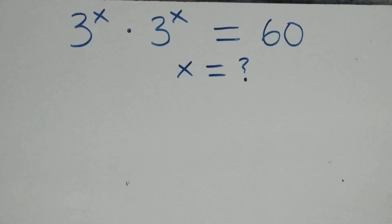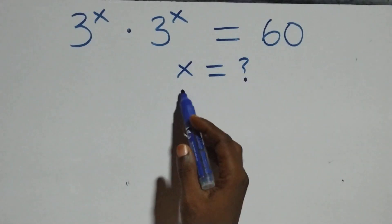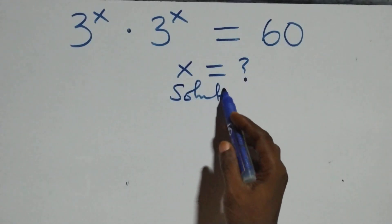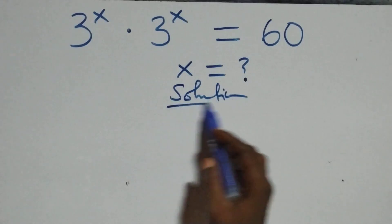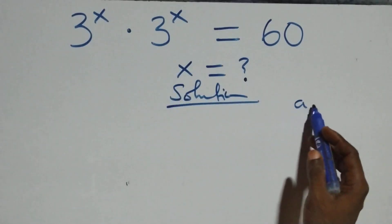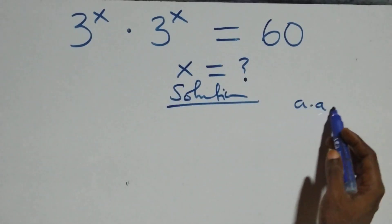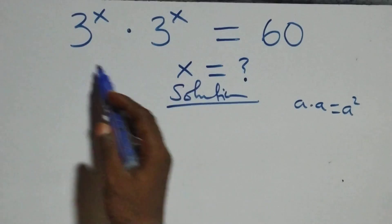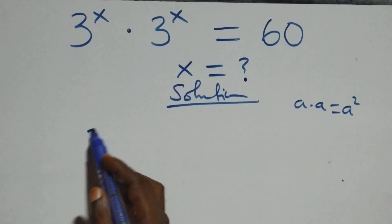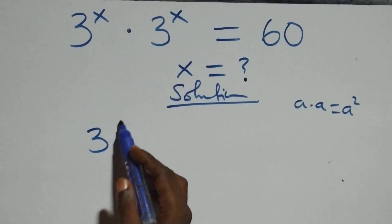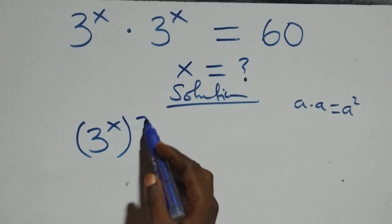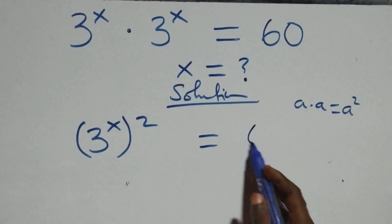Hello, you're welcome. Here we solve a nice exponential equation. What we have here: a times a can be written as a squared, so the same thing multiplying gives us three raised to the power x, all squared, equals sixty.